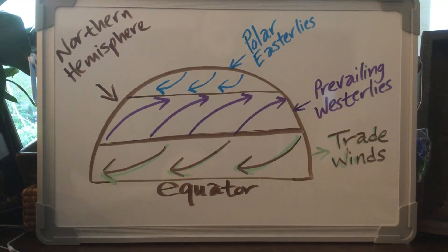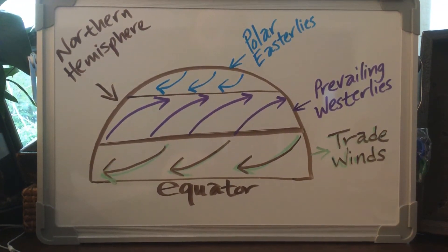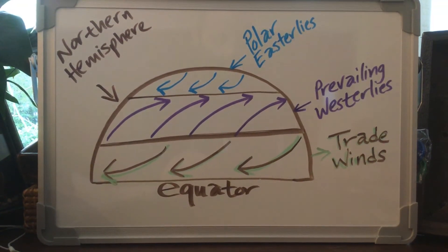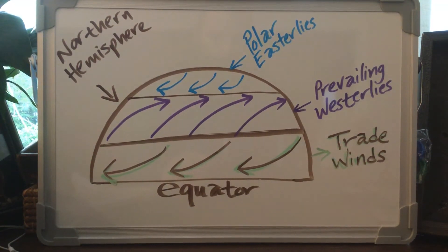They blow from the east to the west, so they're going to be an easterly wind because they come out of the east. And we're going to talk more about this later. It's kind of a confusing concept to talk about wind direction.